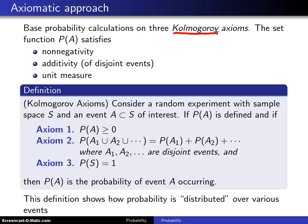And what he said was the set function P of A satisfies three different axioms. The first is known as non-negativity, the second is additivity of disjoint events, and the third is unit measure.